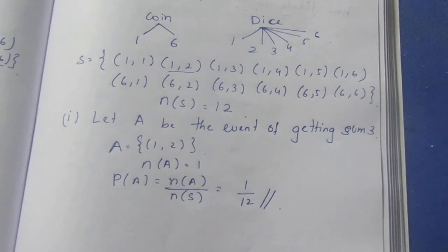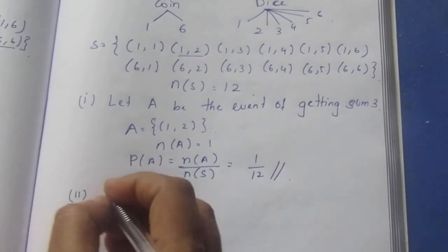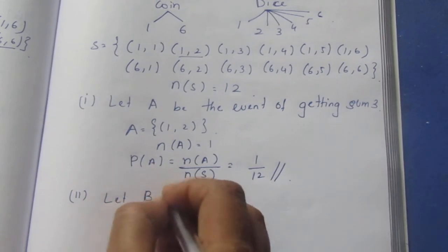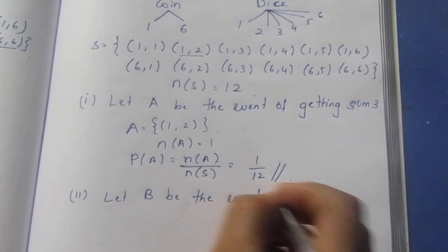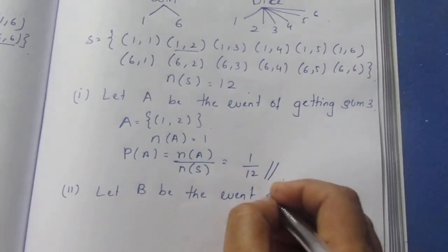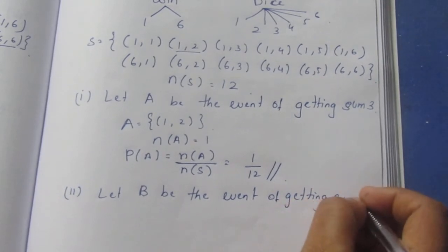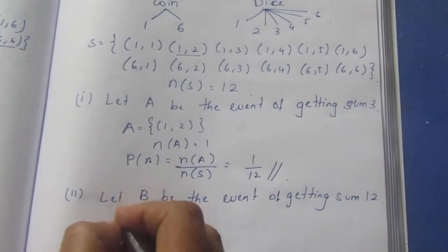For part (ii), sum of 12. Let B be the event of getting sum 12. B equals (6,6).